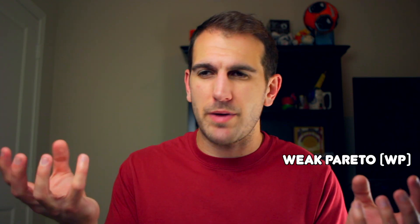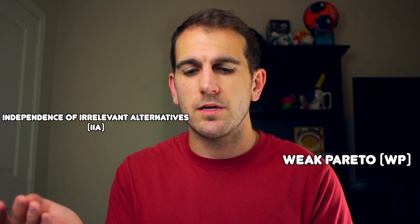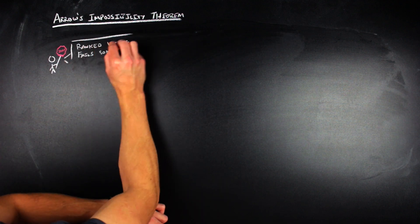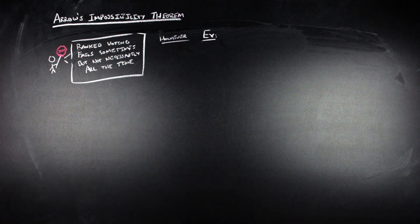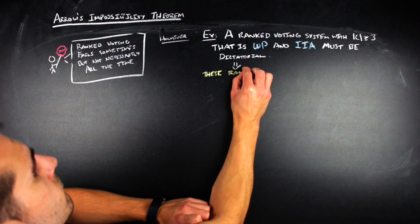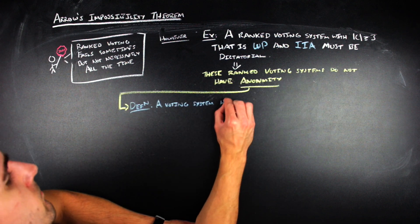To do that, I do have to briefly cover the weak Pareto and independence of irrelevant alternatives example because I want to talk about another fairness property called anonymity. Anonymity is something that's strongly related to dictatorships because if you have one, you usually don't have the other one. In particular, if you are dictatorial, that means that you are not anonymous. And if you are anonymous, that means that you are non-dictatorial by the contrapositive.